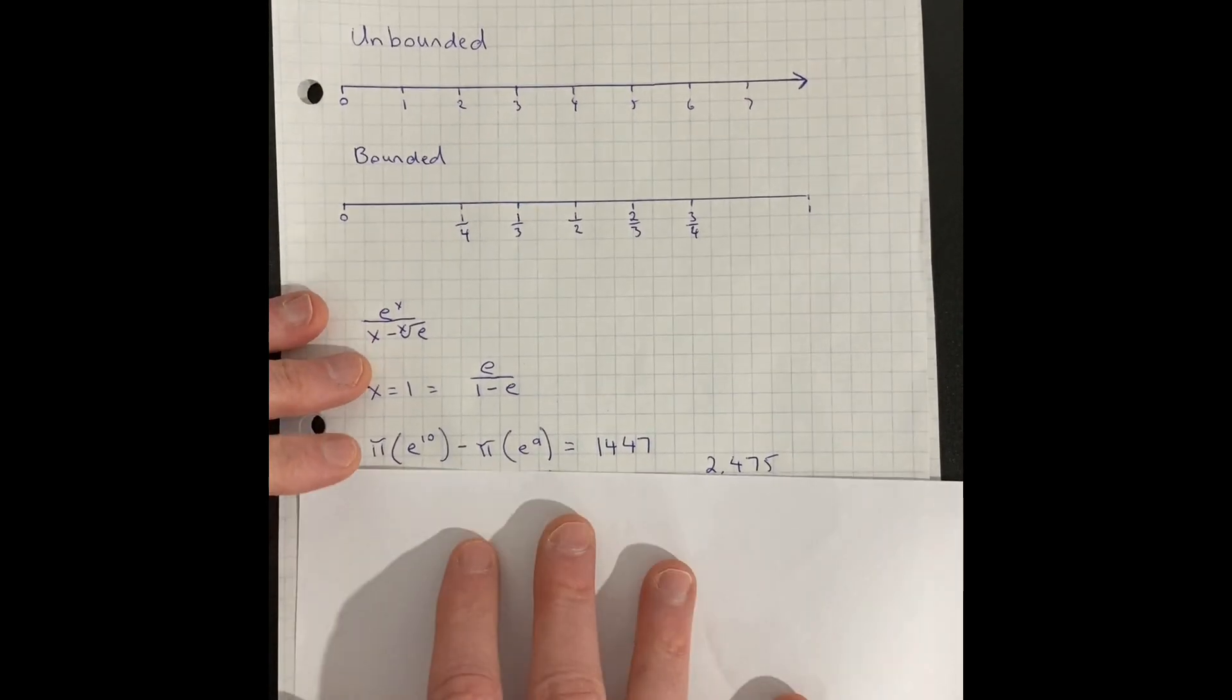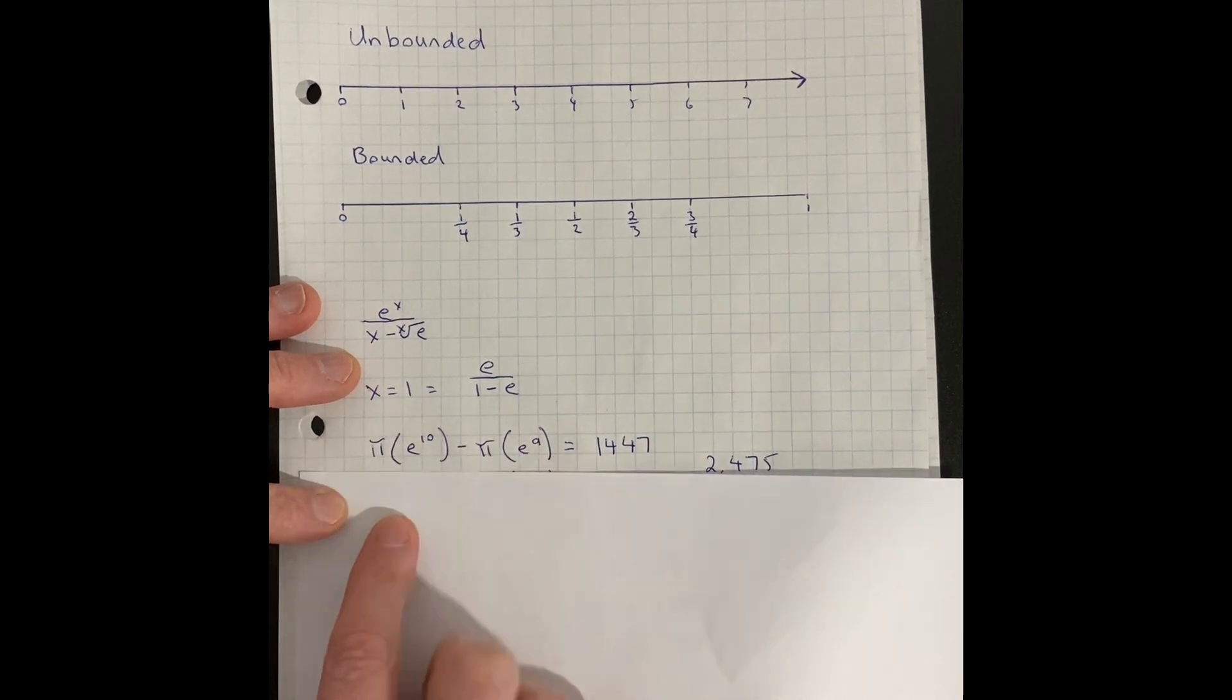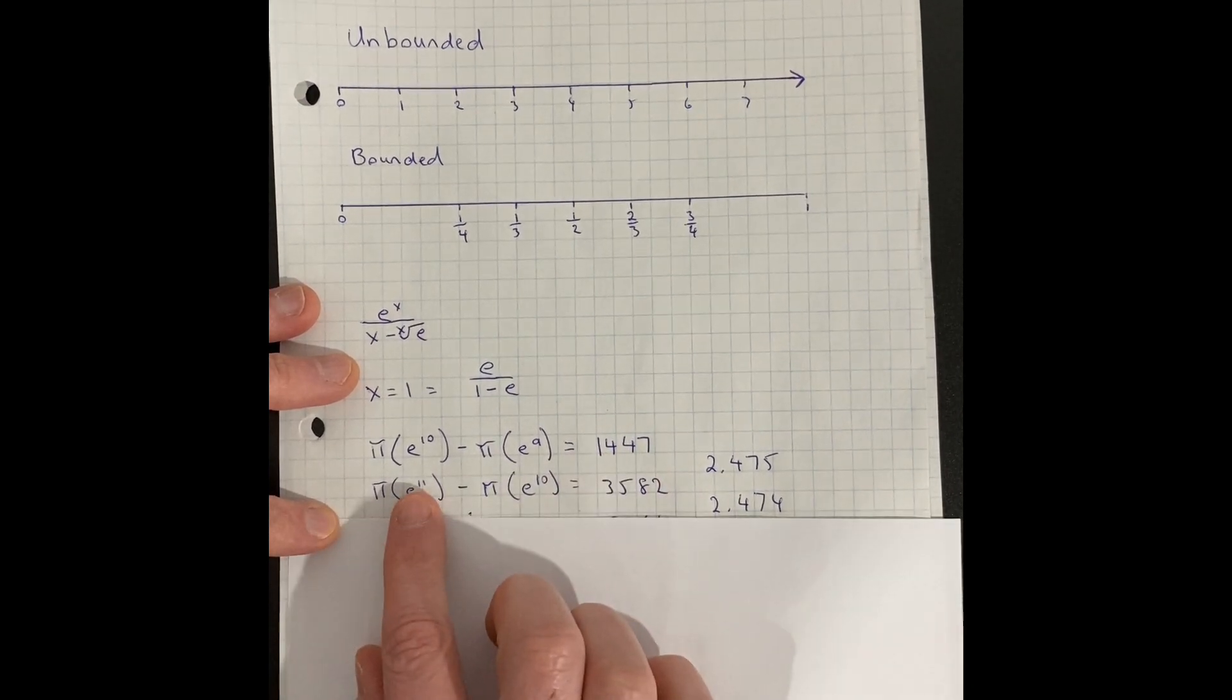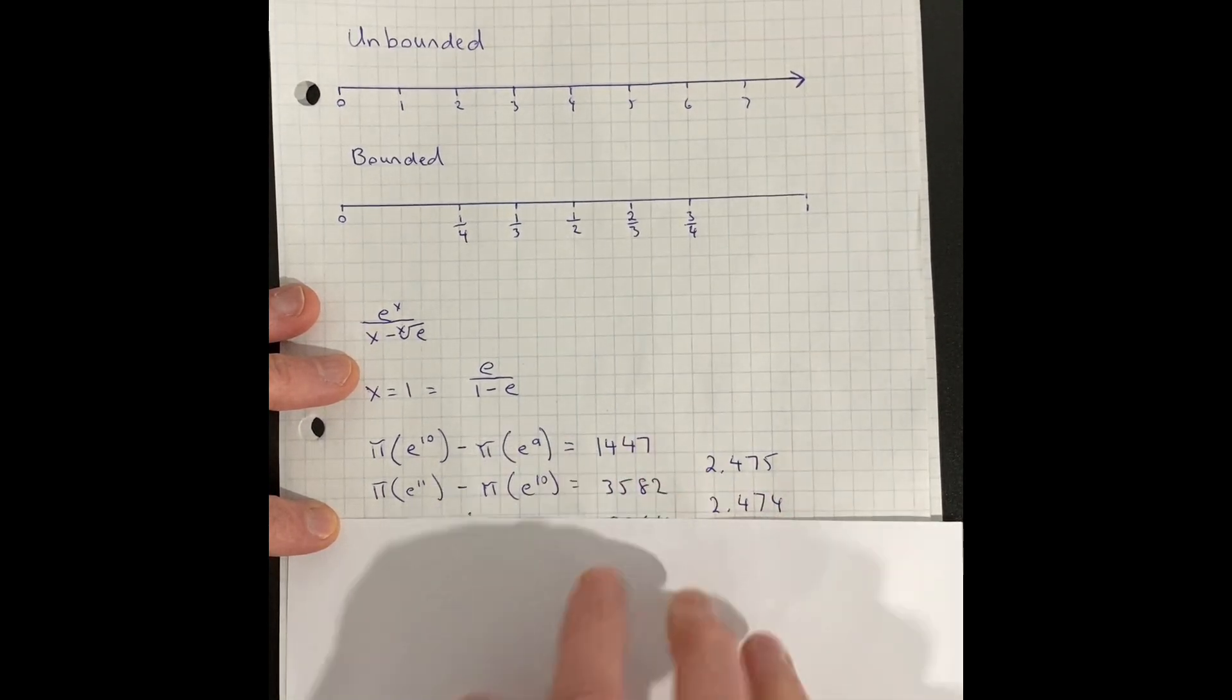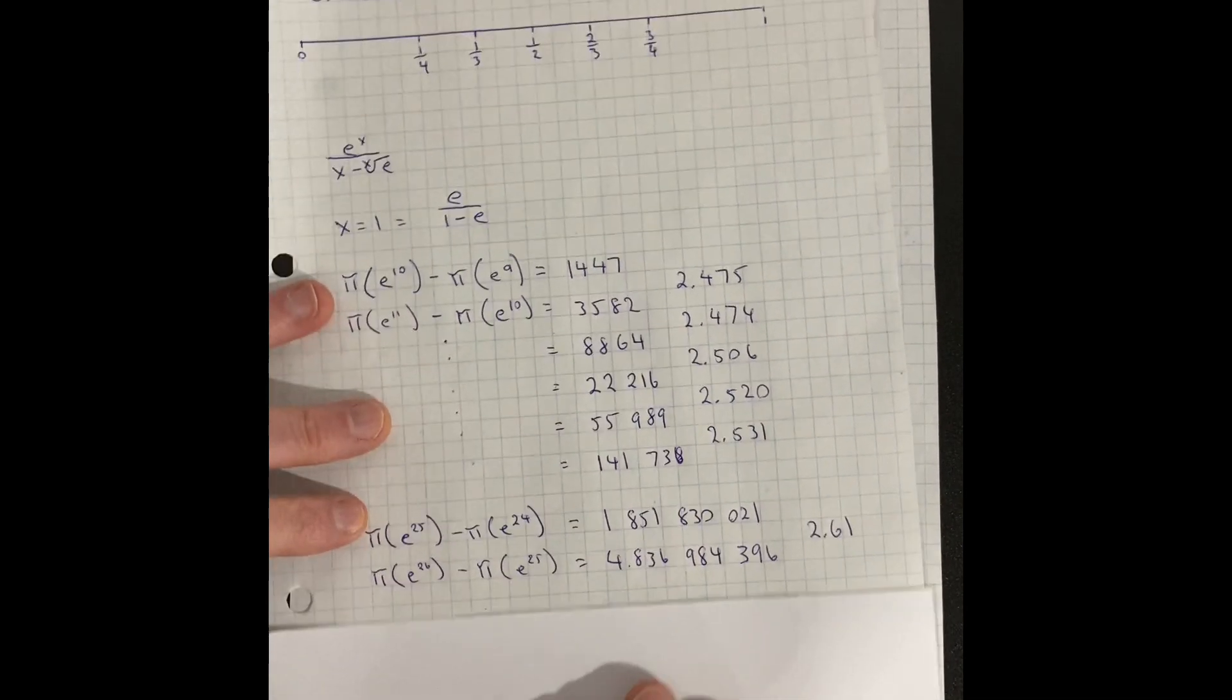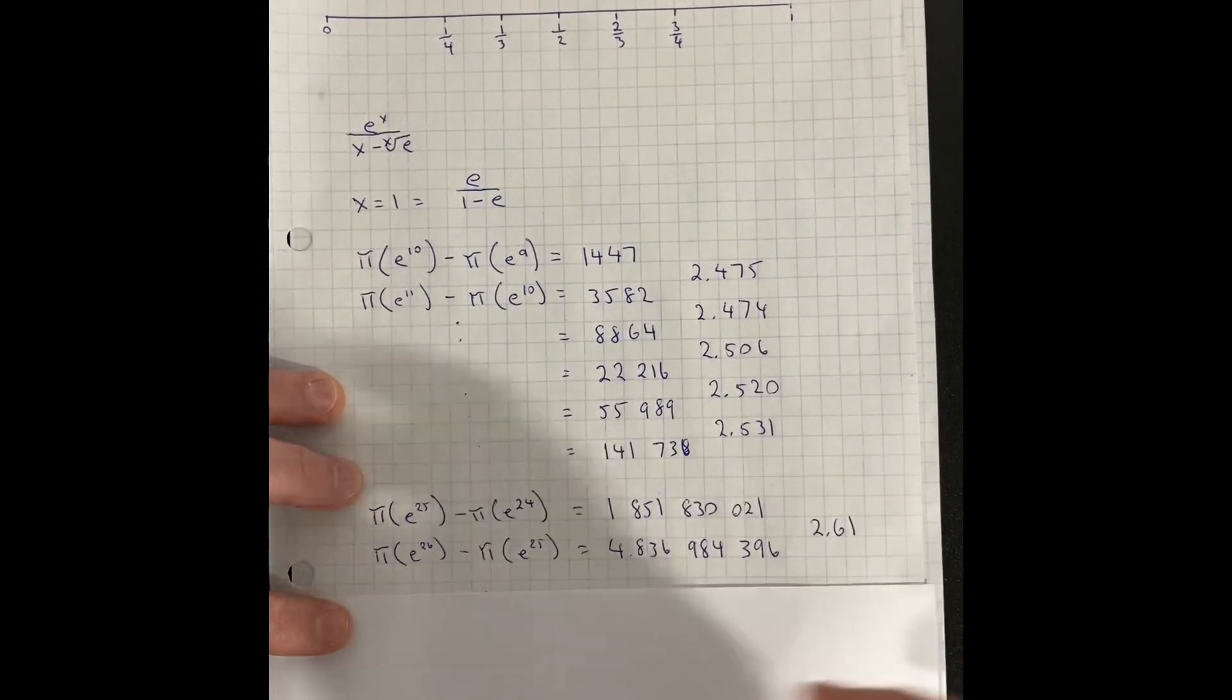So another thing that I notice is that if we hunt for how many primes are between different exponents of e, so e to the 10 minus e to the 9, there's this many primes in between there. And here is e to the 11 minus e to the 10, this many. And we start dividing these, these. Now, obviously, you can see what's happening here. It's kind of obvious it goes to e. I don't know. Here's a big example for you. And yeah, it goes to, I've tried huge numbers.